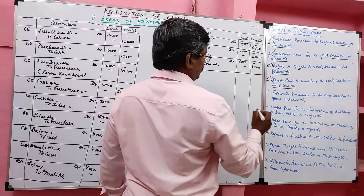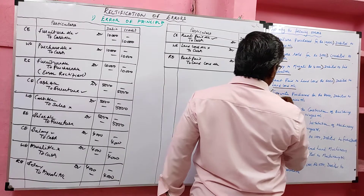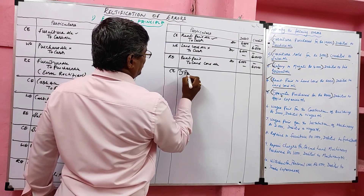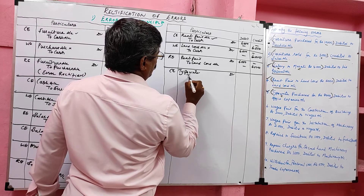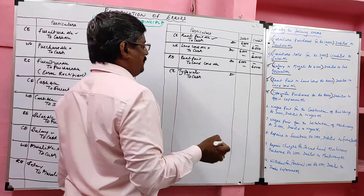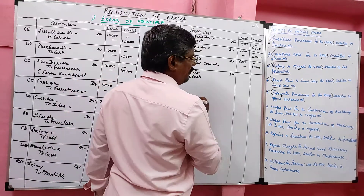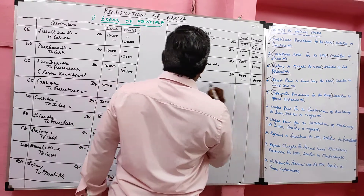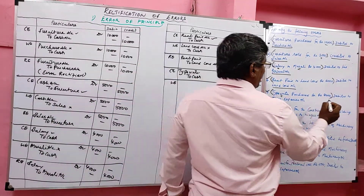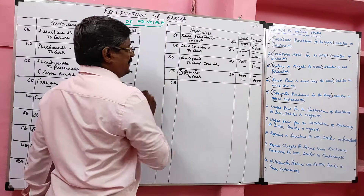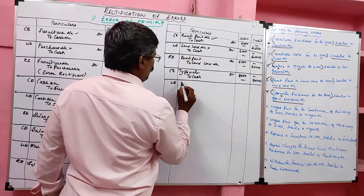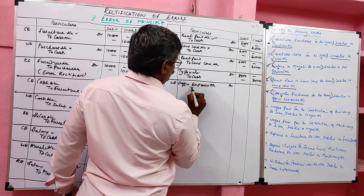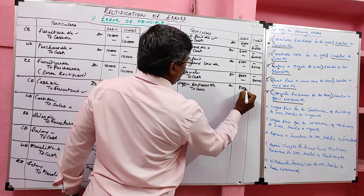Problem 5: Typewriter purchased for rupees 8,000. Correct entry: typewriter account debit to cash, 8,000 — typewriter is a real account, debit what comes in, cash is going out so it is credited. Wrong entry: debit was given to office expenses account instead of typewriter. So wrong entry was: office expenses account debit to cash, 8,000.